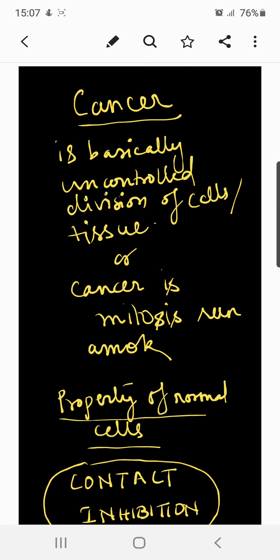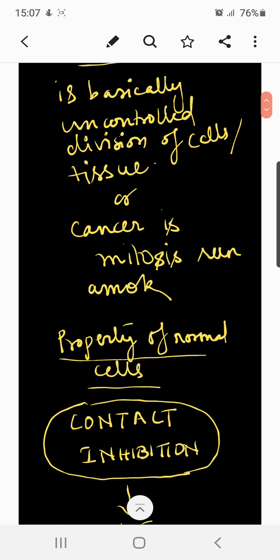More than a million people in India suffer from cancer and a large number of them die from it annually. The mechanisms that underlie the development of cancer, or oncogenic transformation of cells, with their treatment and control, have been some of the most intense areas of research in biology and medicine. In our body, cell growth and differentiation is highly controlled and regulated.